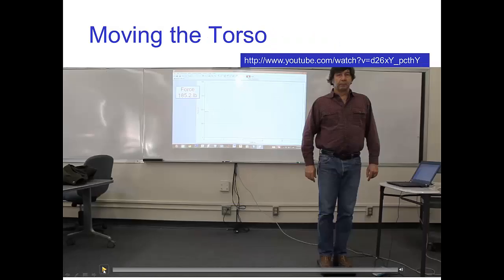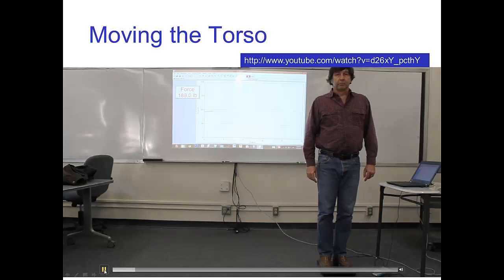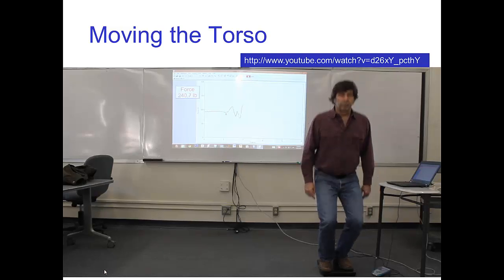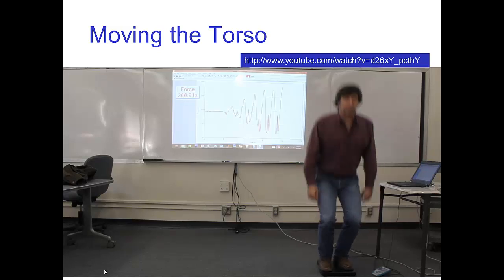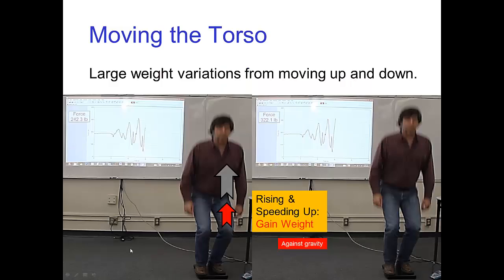In the first clip, I'm just moving my torso up and down. If you watch carefully, here I am rising and speeding up — here are two frames — and if you look back on the graph, my weight is going up. It's already larger than my normal weight of about 180 pounds. Rising and speeding up, I'm up to 242 pounds, and as I'm speeding up even more, my weight rises to an impressive 322 pounds.